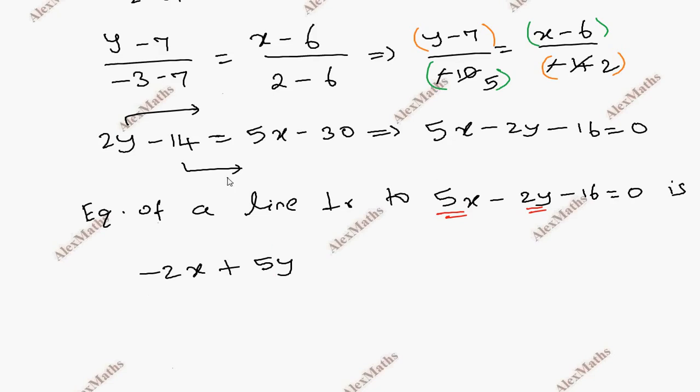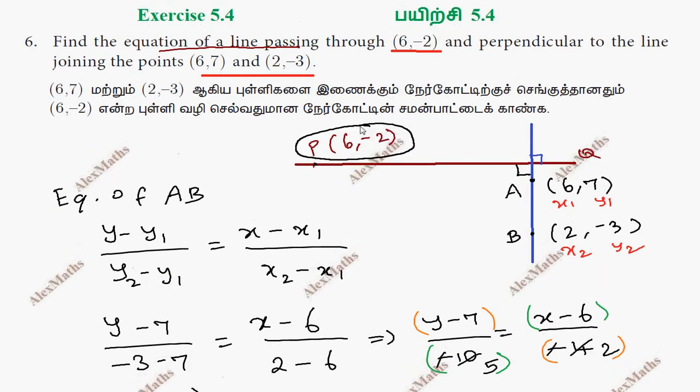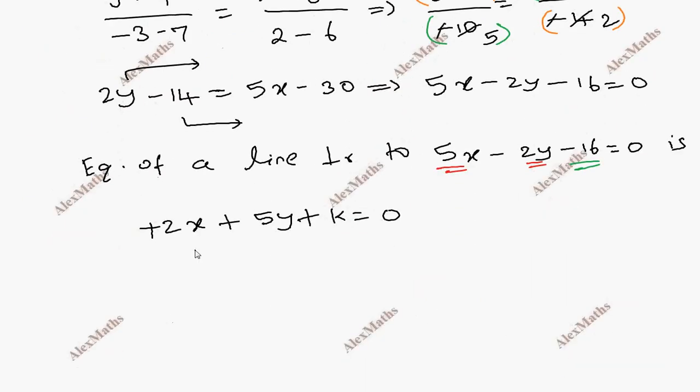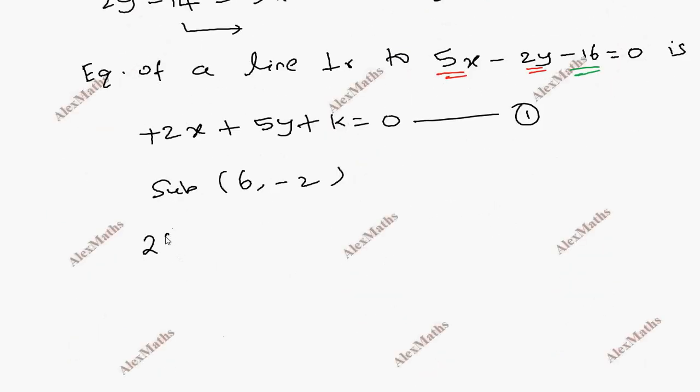The other one, this is minus. Now, here we can change. 2 into 6 plus 5 into -2 plus k = 0. So 12 - 10 + k = 0. This is 2. This is -2.